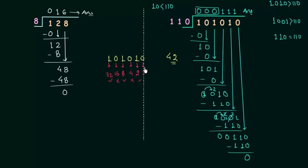We have 2 and we don't have 1. So 32 plus 8 plus 2 is equal to 42. So dividend is 42 and divisor is 6.